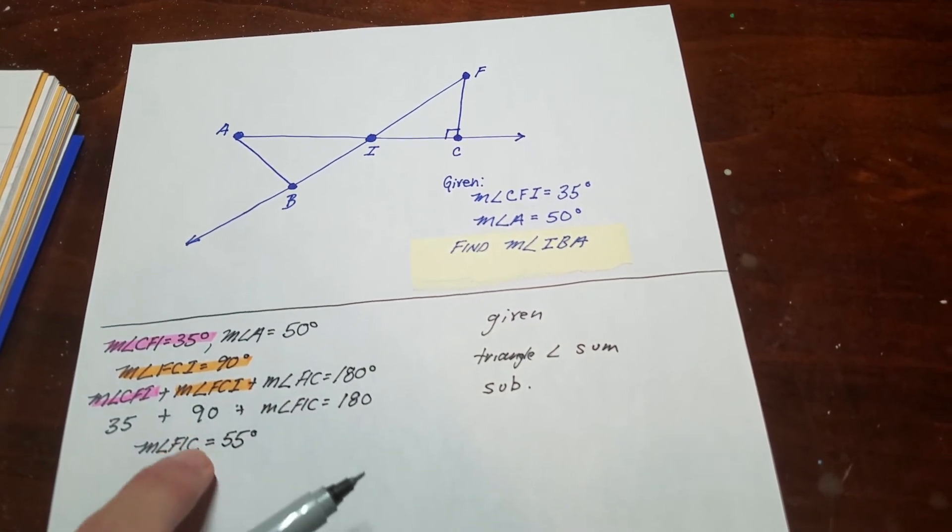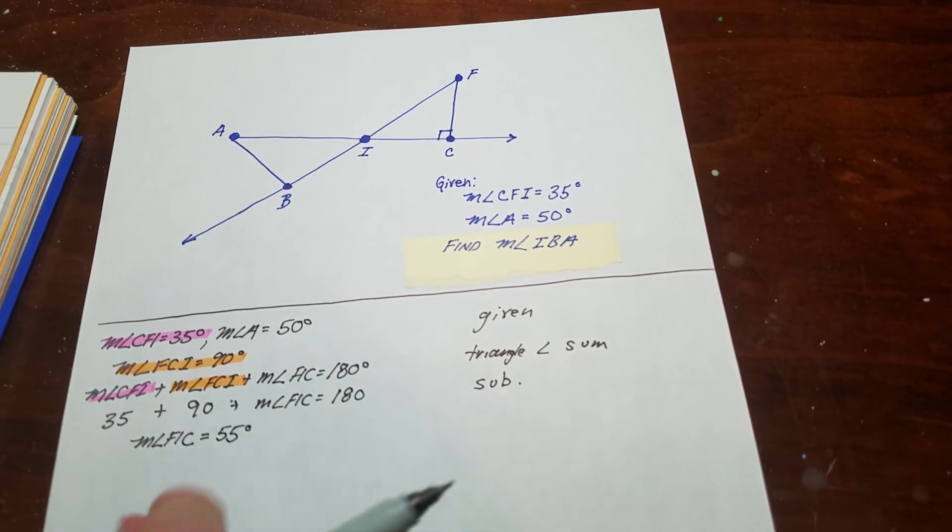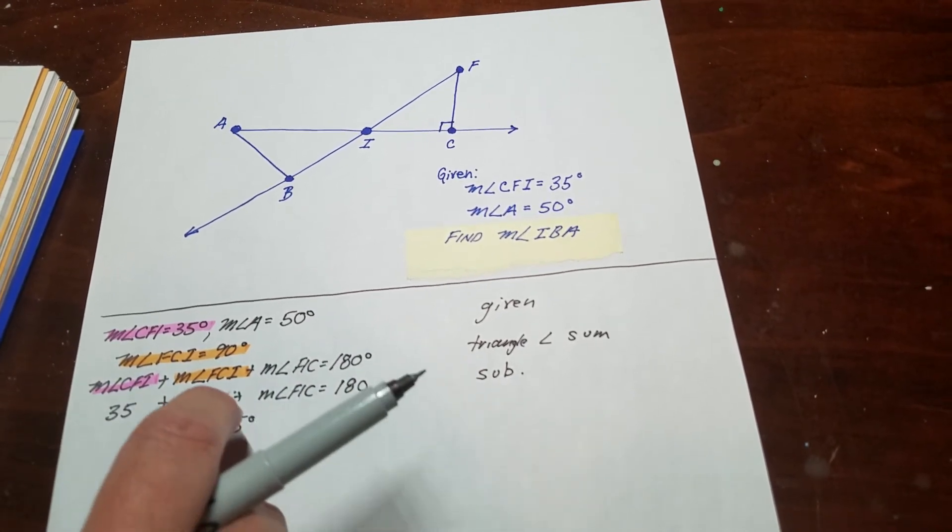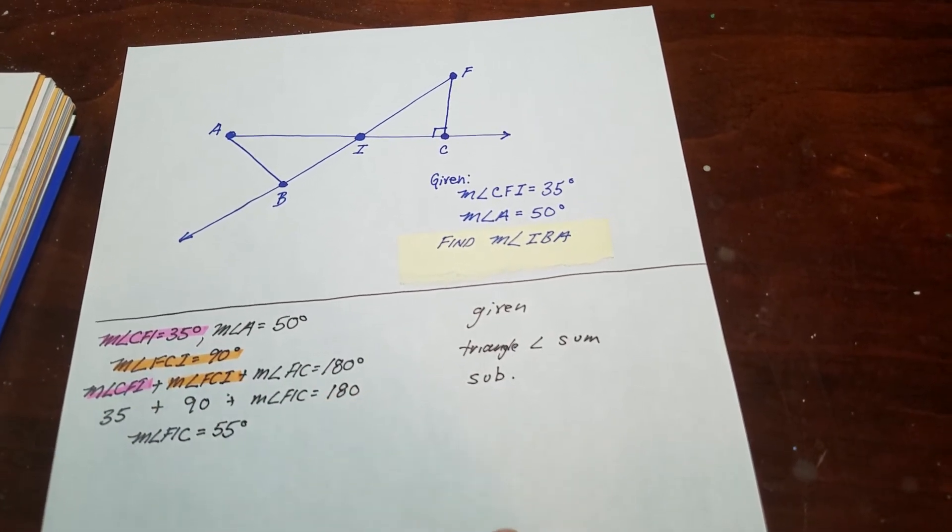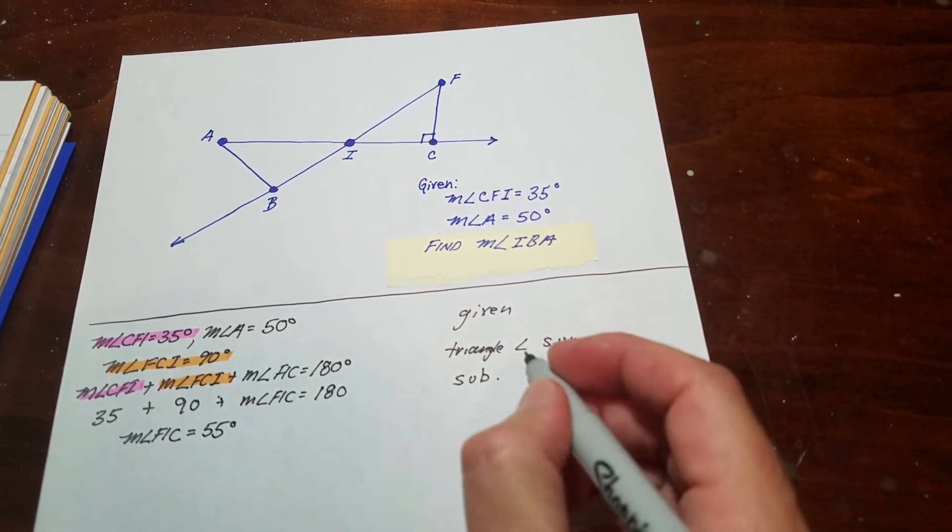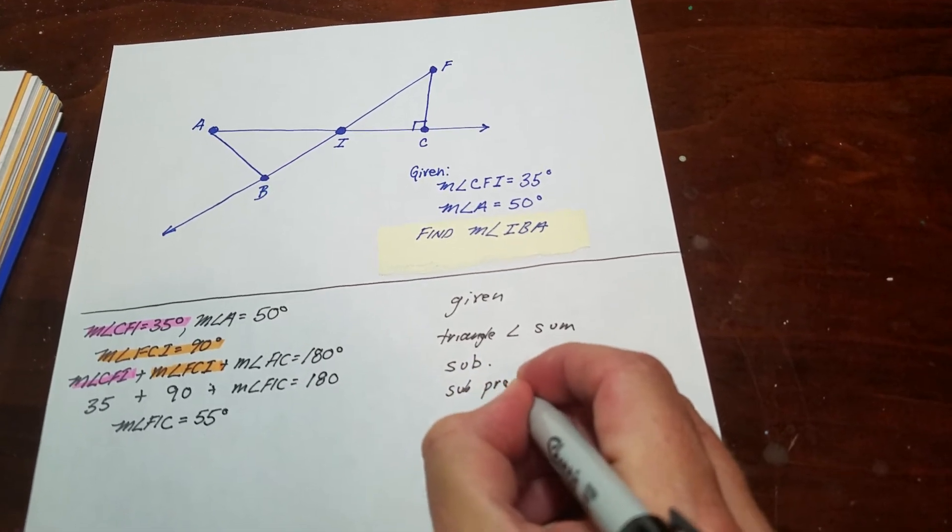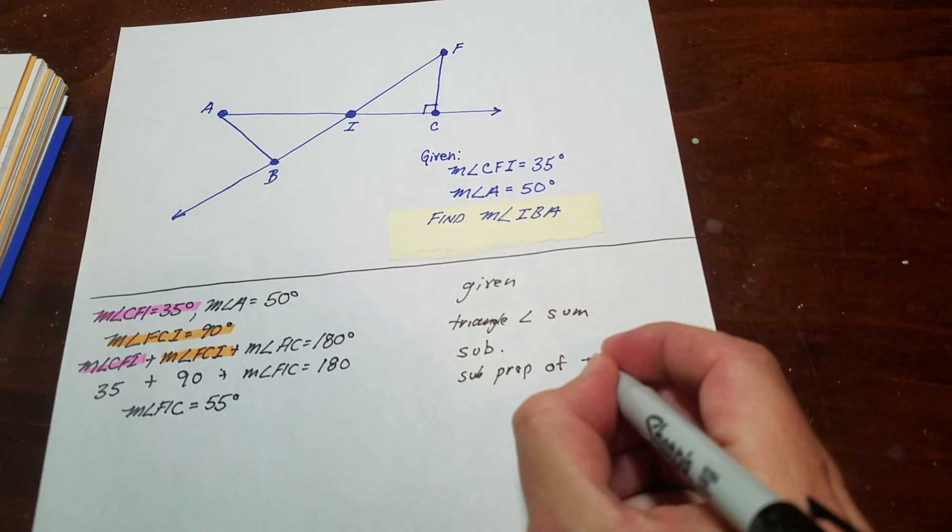So that's 55 degrees. You always double-check this. I can add these three angles and make sure it comes out to 180. 55 plus 35 is 90, and 90 plus 90 is 180, so I know I'm good. That was the subtraction property of equality.